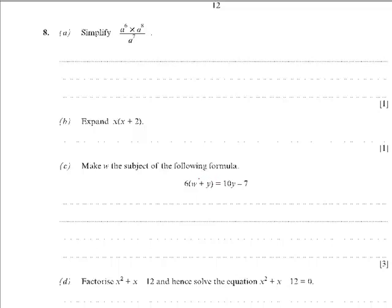In part 8a we use rules of powers. When multiplying two numbers or letters with the same base, we add the powers. So in this case we're going to have a to the power of 6 plus 8, which is 14, over a to the 7.